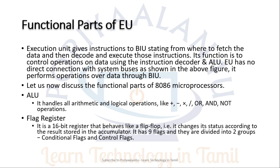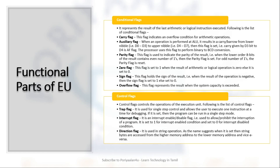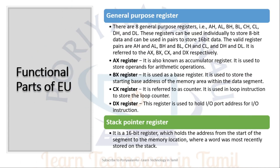The 9 flags in 8086 are divided into two categories: condition flags and control flags. Condition flags store the result of the last arithmetic or logical operation, similar to 8085. These include: Carry flag, Auxiliary flag, Parity flag, Zero flag, and Sign flag. Control flags serve specific command functions in the execution unit, and include: Trap flag, Interrupt flag, and Direction flag — three control flags in total.